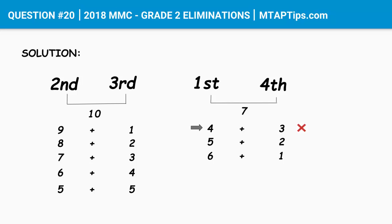Let's try the second option where the first monkey ate 5 bananas while the fourth monkey ate only 2. If that's the case, could the second and third monkey have eaten 9 and 1 bananas? It's still the same — that condition is false because the first monkey should have eaten more than all the others.